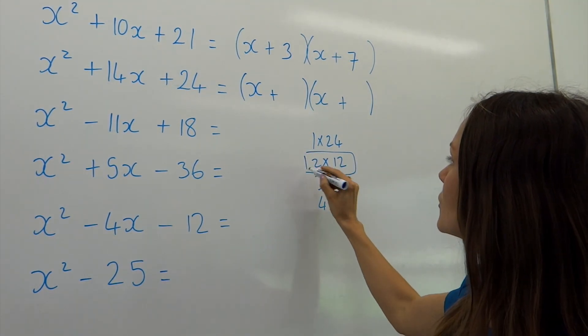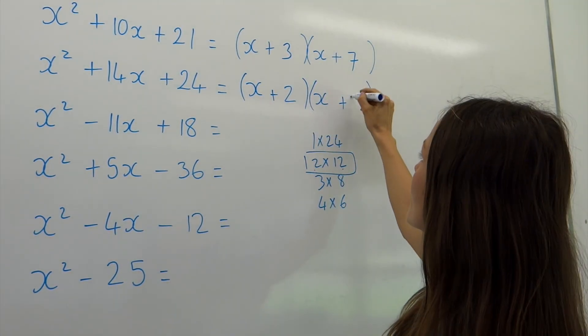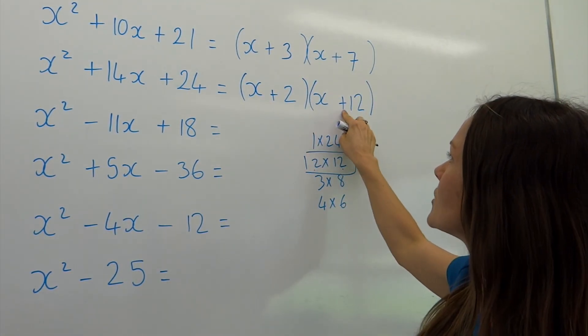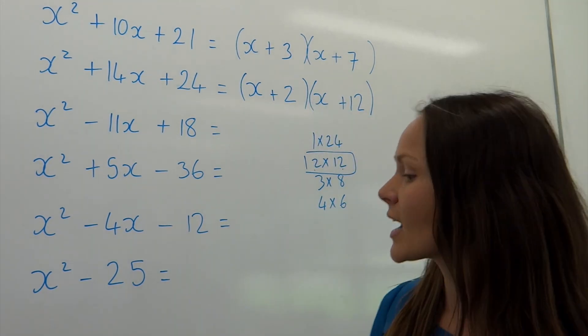So we're going to look down our list to find out which pair add to give 14. So it must be those two because 2 plus 12 gives me 14. So I'm going to fill those in. And remember, the order doesn't matter because these are both positive. Now, on to example 3.